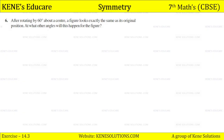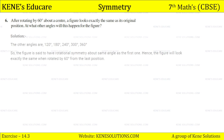Question number six: after rotating by 60 degrees about a center, a figure looks exactly the same as its original position. At what other angles will this happen? The other angles are 120 degrees, 180 degrees, 240 degrees, 300 degrees, and 360 degrees. The figure will look exactly the same when rotated by 60 degrees from the last position each time.